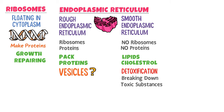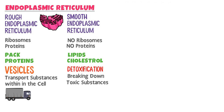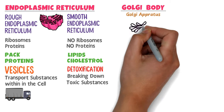What are vesicles? Vesicles are the trucks inside the cell — they transport substances within the cell from one part to another. The protein formed by the ribosomes and packed by the rough endoplasmic reticulum is transported by the vesicles to the Golgi body, also known as the Golgi apparatus.